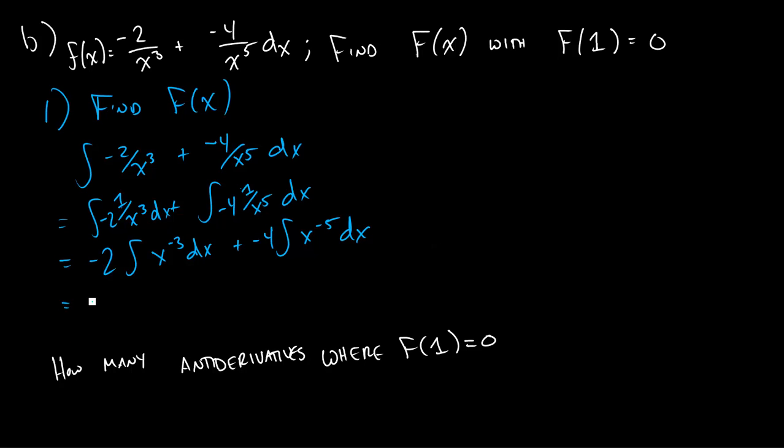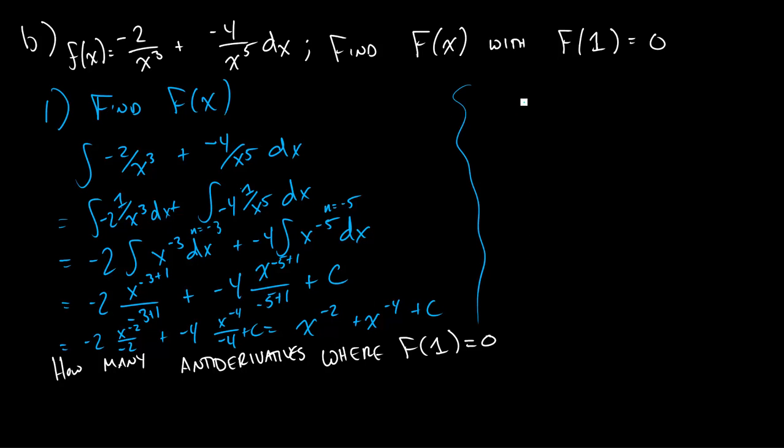Now it's just a simple application of our formula. We'll have negative 2 times x to the negative 3 plus 1 is x to the negative 2 divided by negative 2. We're going to add that to negative 4 times x to the negative 4 divided by negative 4. If I go through and simplify this, I'll have negative 2 x to the negative 2 over negative 2 plus negative 4 x to the negative 4 over negative 4. I'll just get x to the negative 2 plus x to the negative 4 plus c. That's my big F of x before I've narrowed down my c.